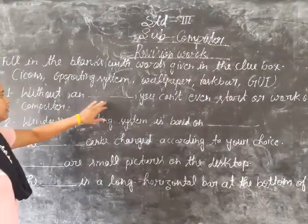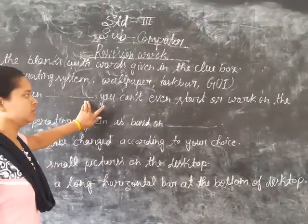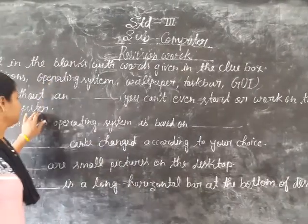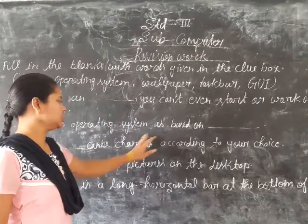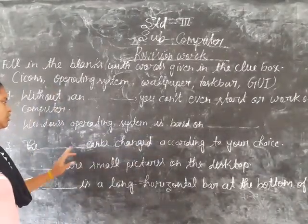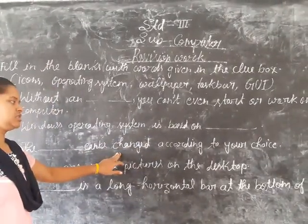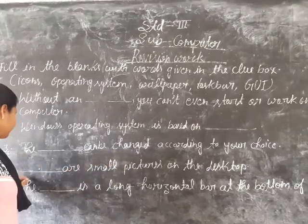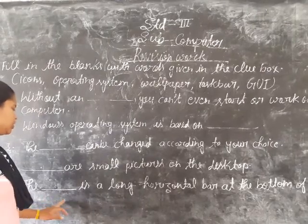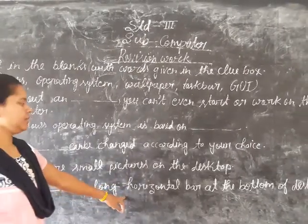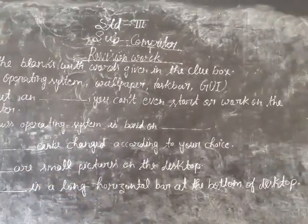First, without an operating system, you can't even start work on the computer. Second, windows operating system is based on GUI. Third, the wallpaper can be changed according to your choice. Fourth, icons are small pictures on the desktop. Fifth, the taskbar is a long horizontal bar at the bottom of the desktop.